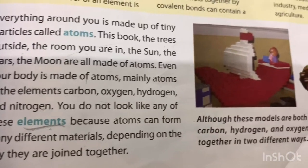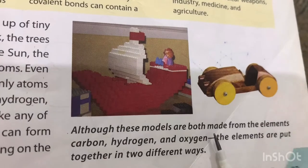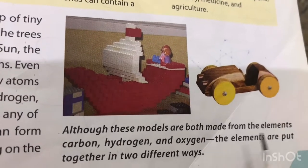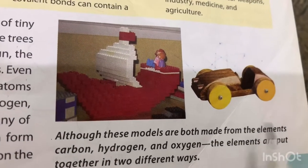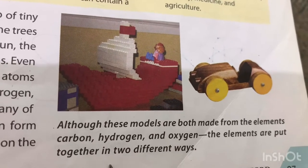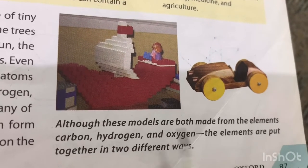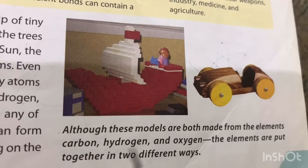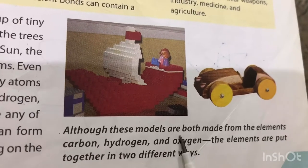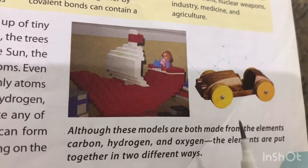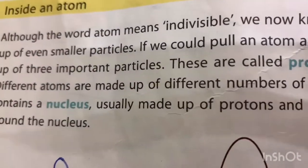Why don't we look like the elements carbon, hydrogen, oxygen, and nitrogen? Because atoms can form many different materials depending on the way they are joined together. Although some models are both made from the elements carbon, hydrogen, and oxygen, the elements are put together in two different ways, so they look completely different.